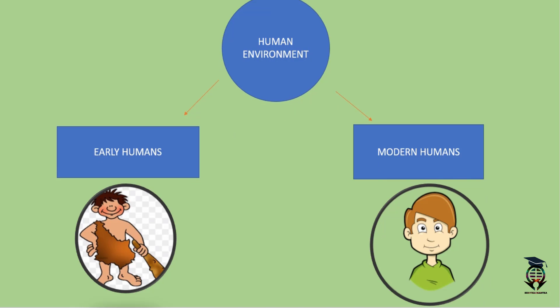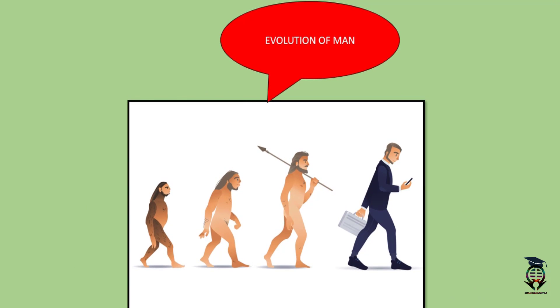This image shows the evolution of human beings. Human beings have changed in their dressing sense. We can see that early humans were not wearing any clothes, but as humans have grown and made inventions, the modern human being is now suited up.